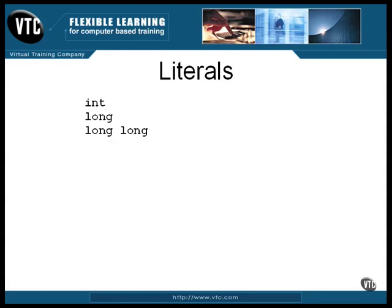If you use two L's, you get a long long. This is a new type of literal which came about from the C99 standard. You can declare an unsigned with the letter U. This is an int by default, but you have to declare it as unsigned.